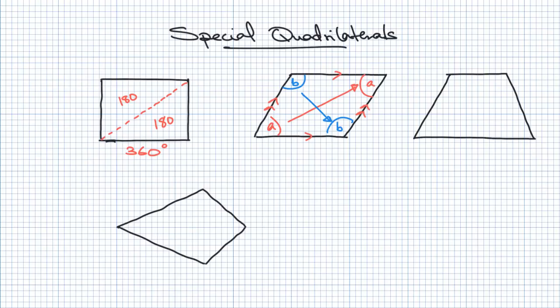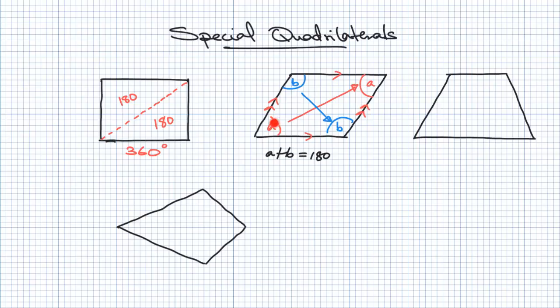We've also got a trapezium over here. But before I finish with the parallelogram — if you don't remember your angles in parallel lines, it might be an idea to go back and check that out. This line is parallel to that line and a transversal cuts them, which means these angles are co-interior angles. So you can say a plus b is equal to 180. Each pair of co-interior angles in a parallelogram adds up to 180.